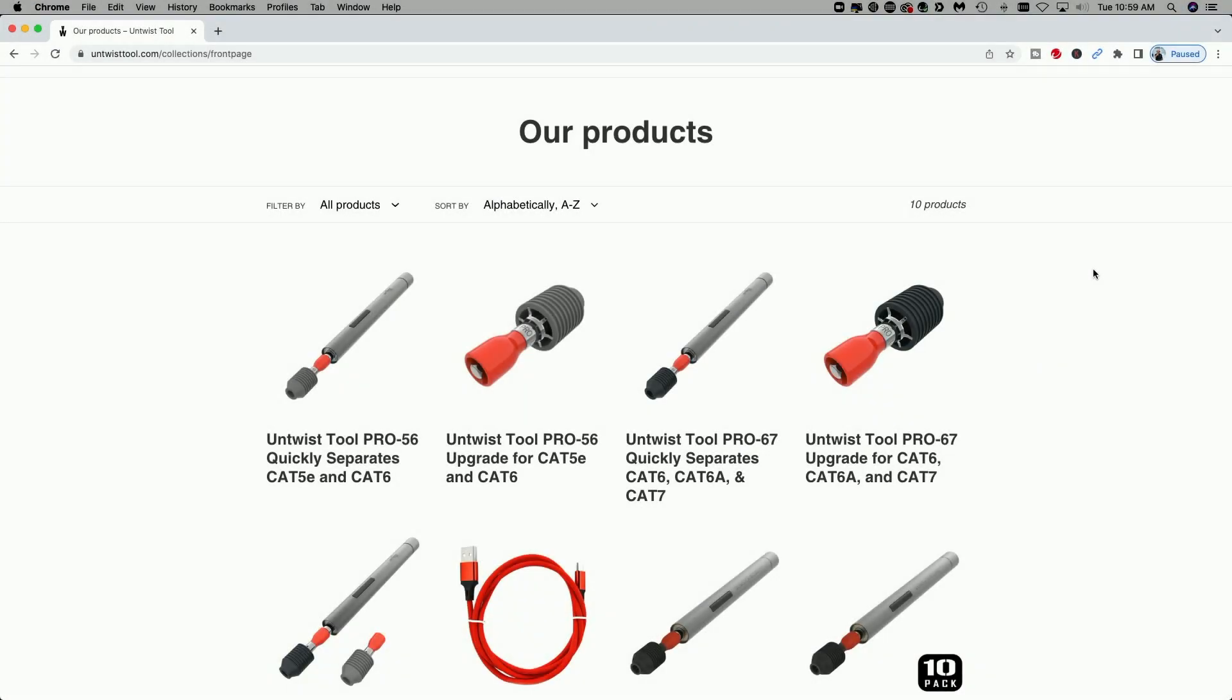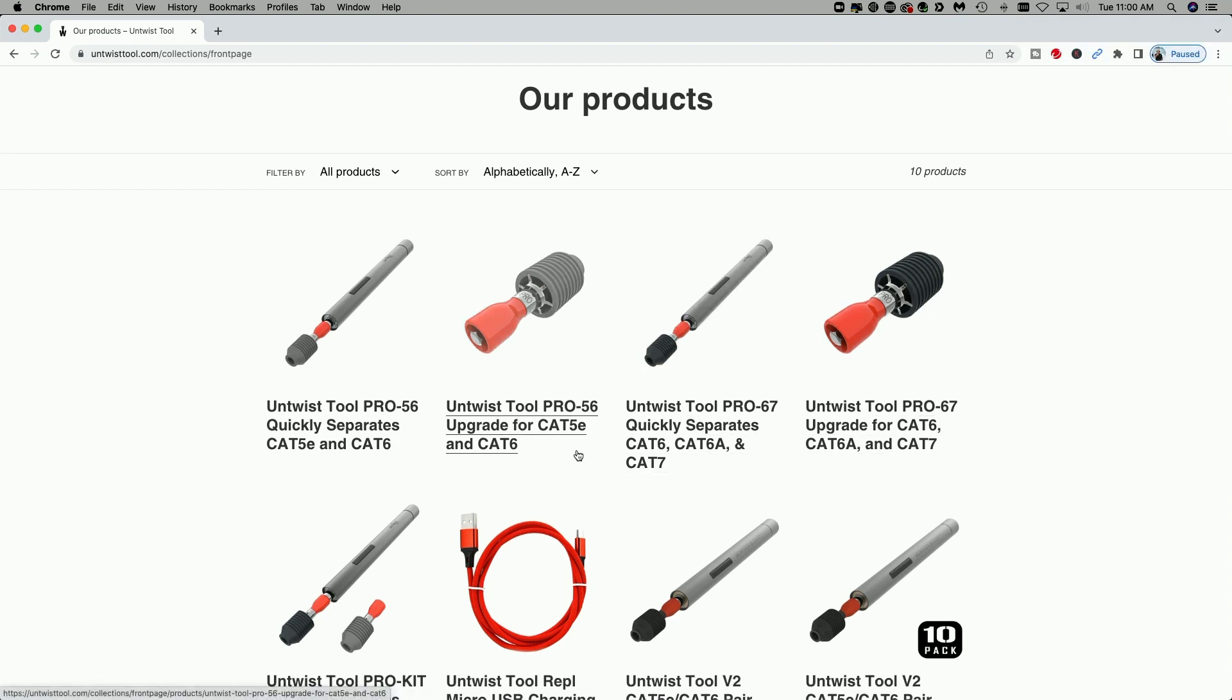Coming in at number five is the untwist tool. I'm looking at the untwist tool website at untwisttool.com. I'll put this down in the video description. Since I purchased mine about two years ago, they've made some quite nice improvements. They have one that's specifically for Cat 5e and Cat 6, another one for Cat 6, Cat 6a and Cat 7, and a series of battery operated handles.